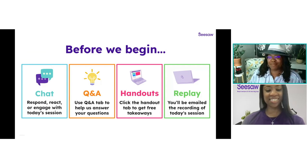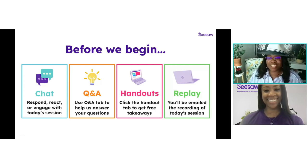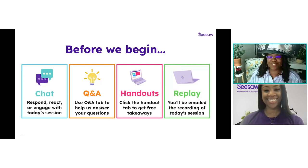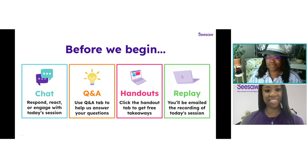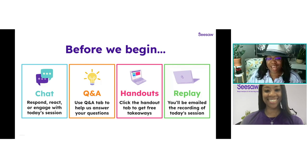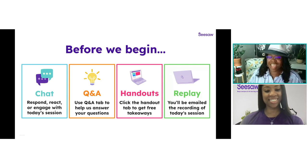Before we begin, a few housekeeping items. If you have questions during the session that you would like Mia to answer, please click on the Q&A tab and ask them there — this ensures we will not miss them. If any questions go unanswered, we will reach out after the webinar. Other comments or ideas can go in the chat tab. Ensure your chat and Q&A tabs are open; click the chat icon in the lower right corner. You'll have the option to click between the chat, Q&A, and handout tabs. The handouts tab includes key takeaways for today's session.